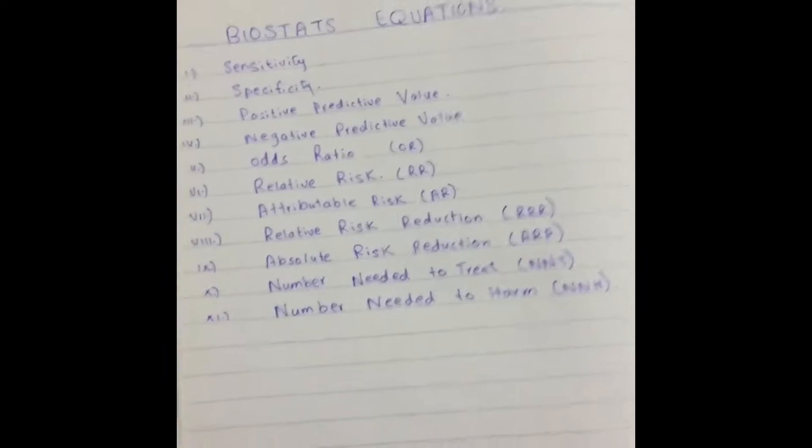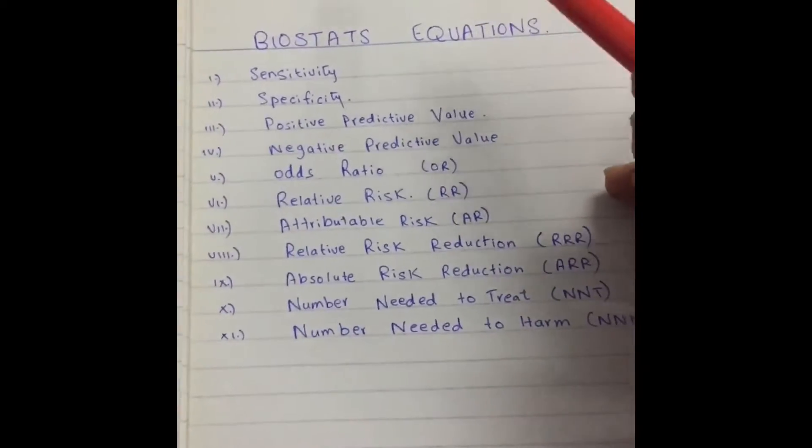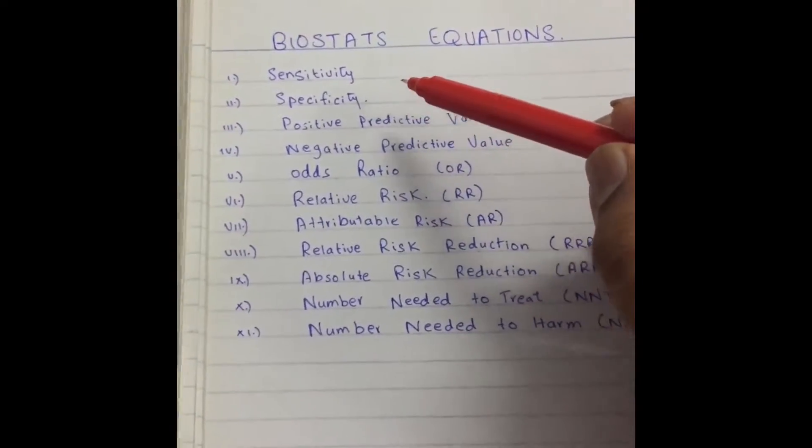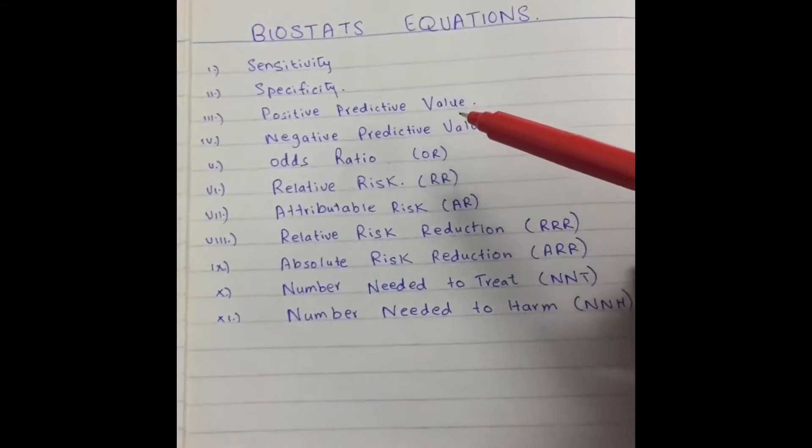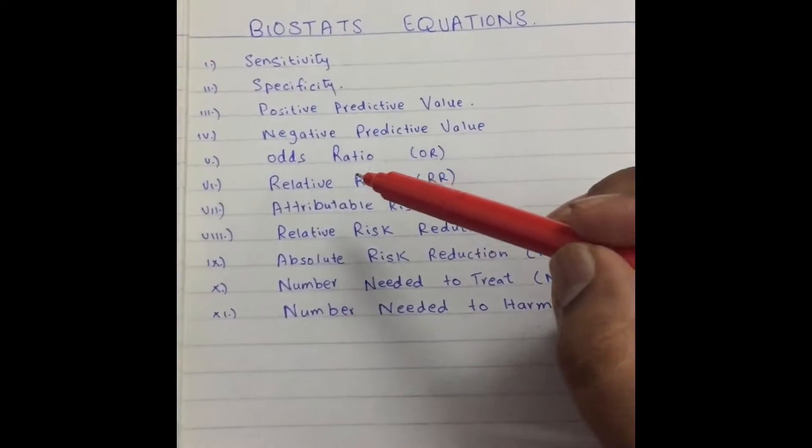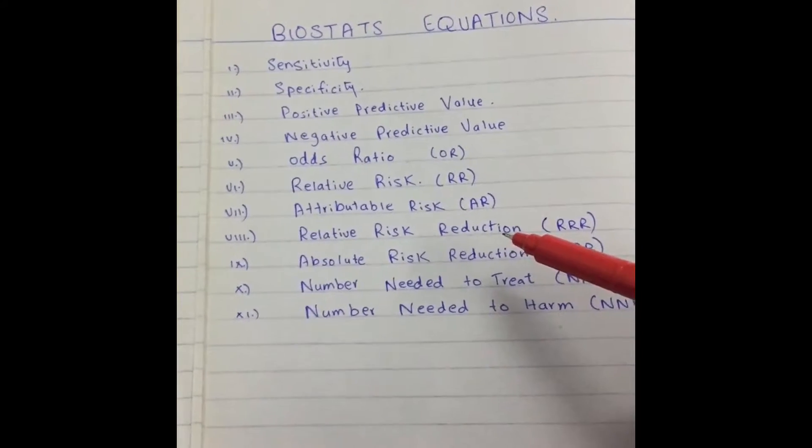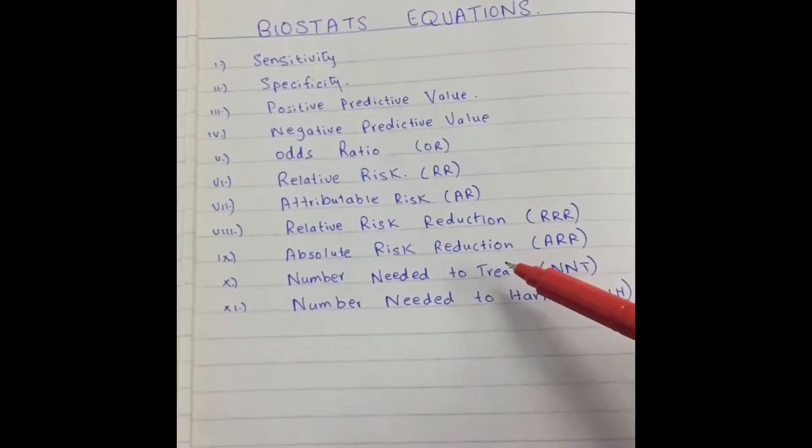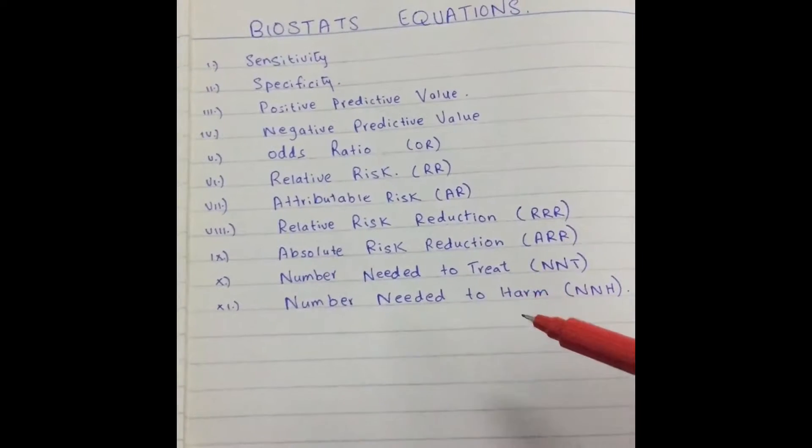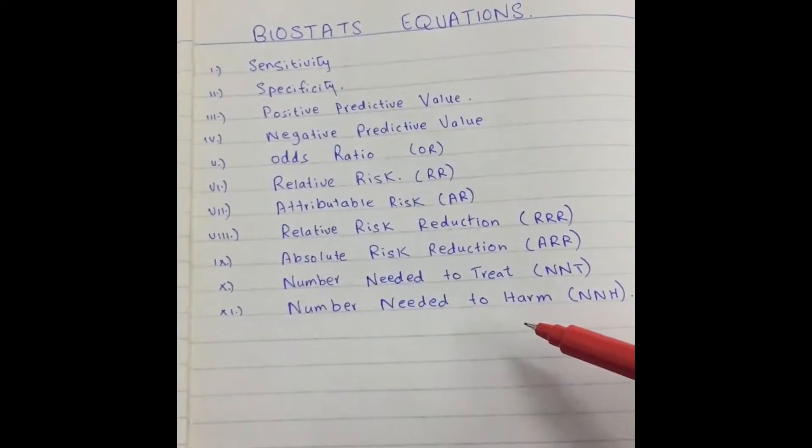Here is a summary: Sensitivity, Specificity, Positive Predictive Value, Negative Predictive Value, Odds Ratio, Relative Risk, Attributable Risk, Relative Risk Reduction, Absolute Risk Reduction, Number Needed to Treat, and Number Needed to Harm.